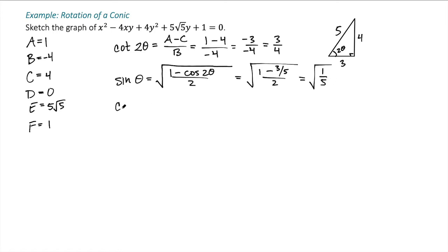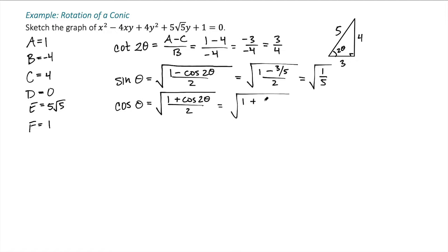For cosine of θ, I use the half-angle identity: cosine θ equals the square root of (1 plus cosine 2θ) over 2. The cosine of 2θ was 3 fifths, so this is 8 fifths over 2, which is 4 fifths. So I get the square root of 4 fifths. Now I have sine θ and cosine θ to find the new coefficients.